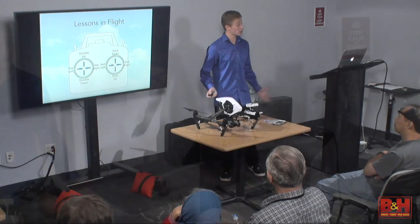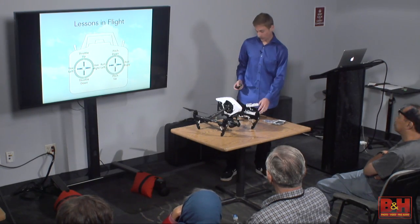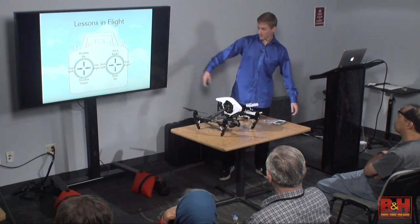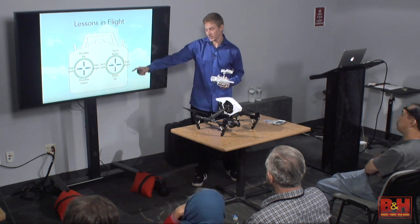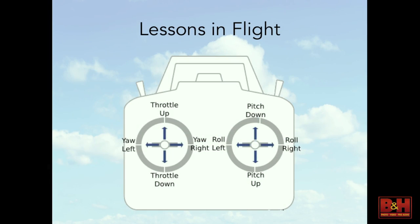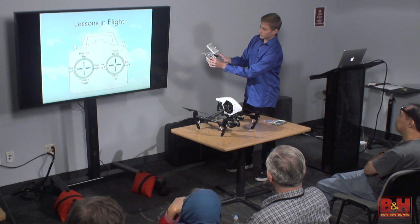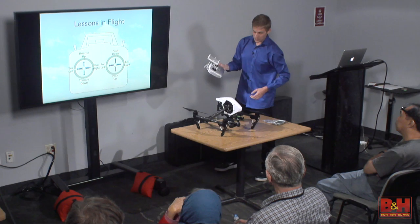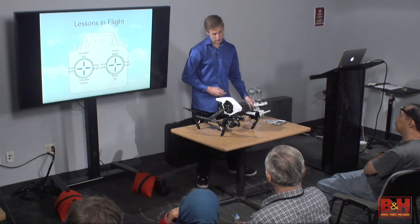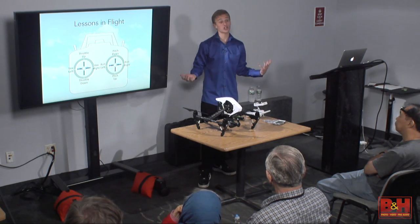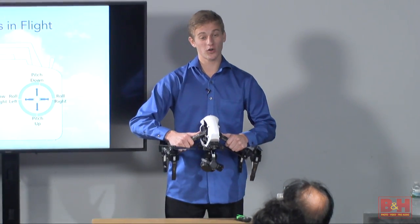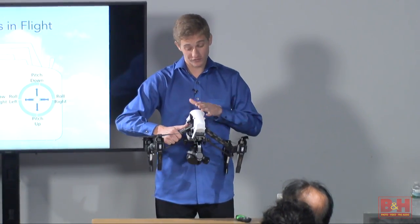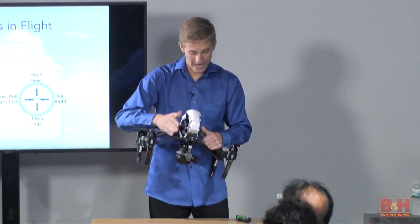So we're going to do a quick demo. This is a diagram that will show you what I'm doing down here. There are two controls on each stick. On the left stick, you have left and right — that is the yaw, which is the orientation of the drone. Yaw is probably the most important and hardest to learn. You want your drone most of the time to be nose out, facing away from you, with the camera facing away from you.